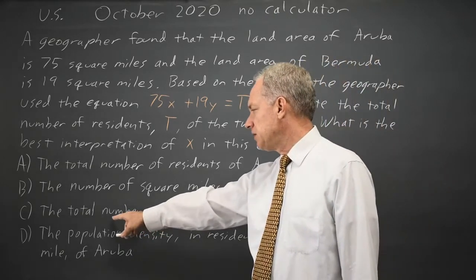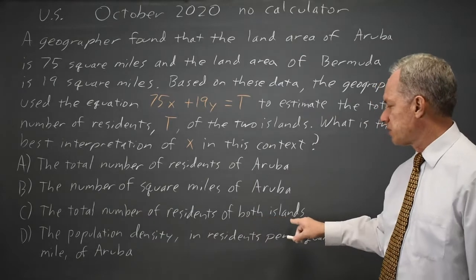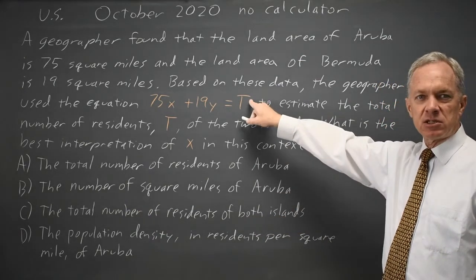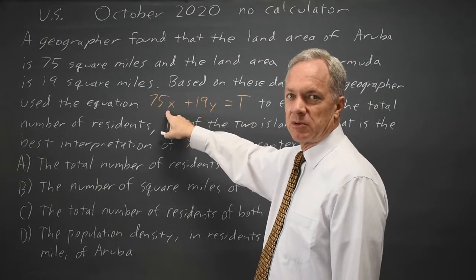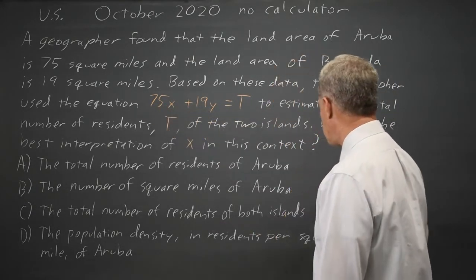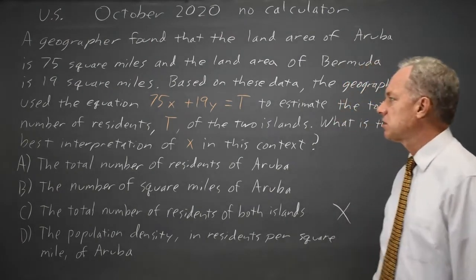Let's jump to choice C: the total number of residents of both islands. But t is the total number of residents of both islands. So 75 times a number that's equal to that will be much bigger than t, so choice C is not correct.